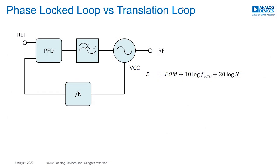Phase locked loop devices work by comparing a reference to a divided output frequency. The in-band phase noise can be calculated using the formula shown here, based on figure of merit, phase frequency detector frequency, and the divider value.